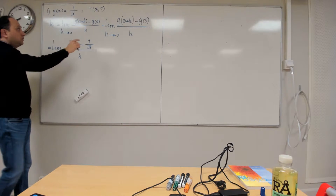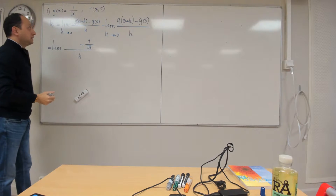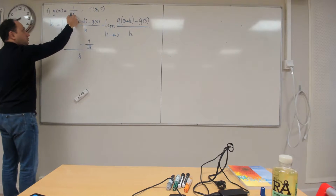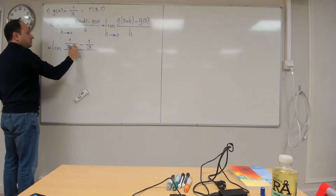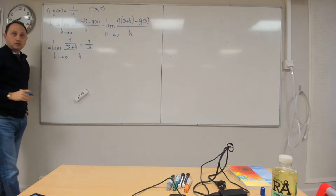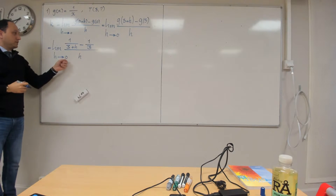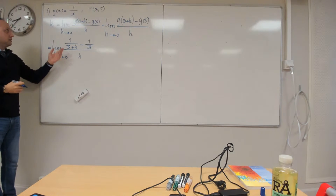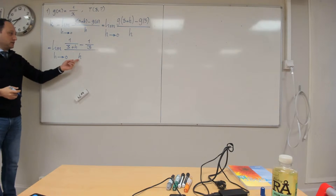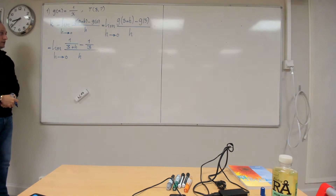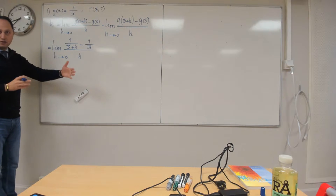And then what we need to do, you need to replace appropriate expressions. If I want to calculate g of 3, I need to go to my function and replace the input x with 3. So this becomes 1 over 3. And then if I want to calculate g of 3 plus h, the input of this function is 3 plus h, so I replace x with that expression everywhere. There is only one place that x appears, so I write the square root — actually 1 over 3 plus h.